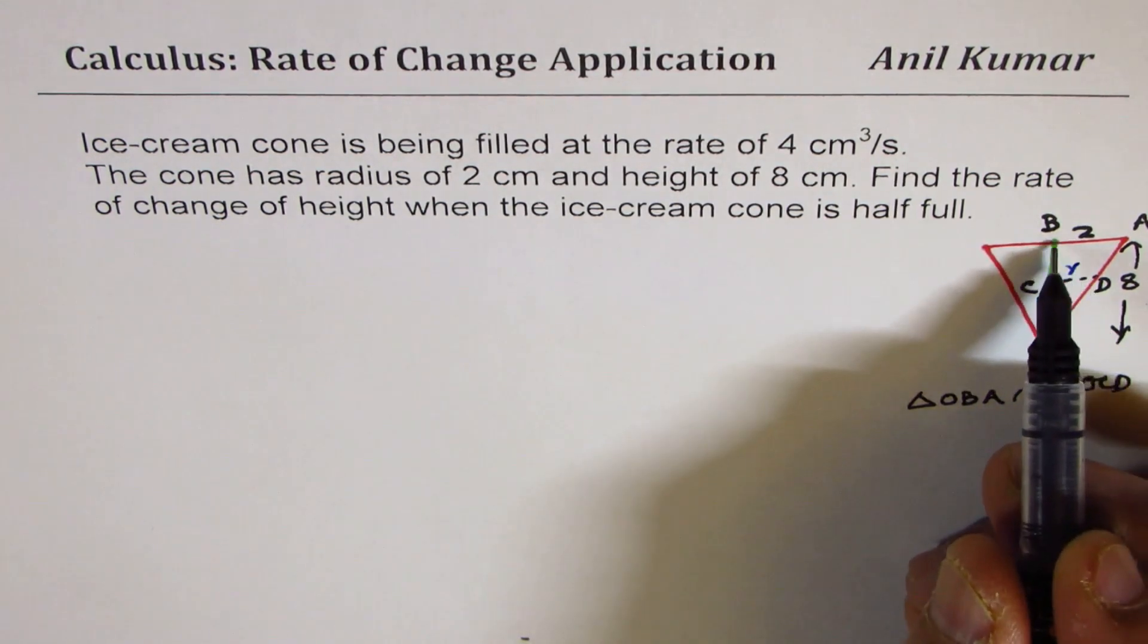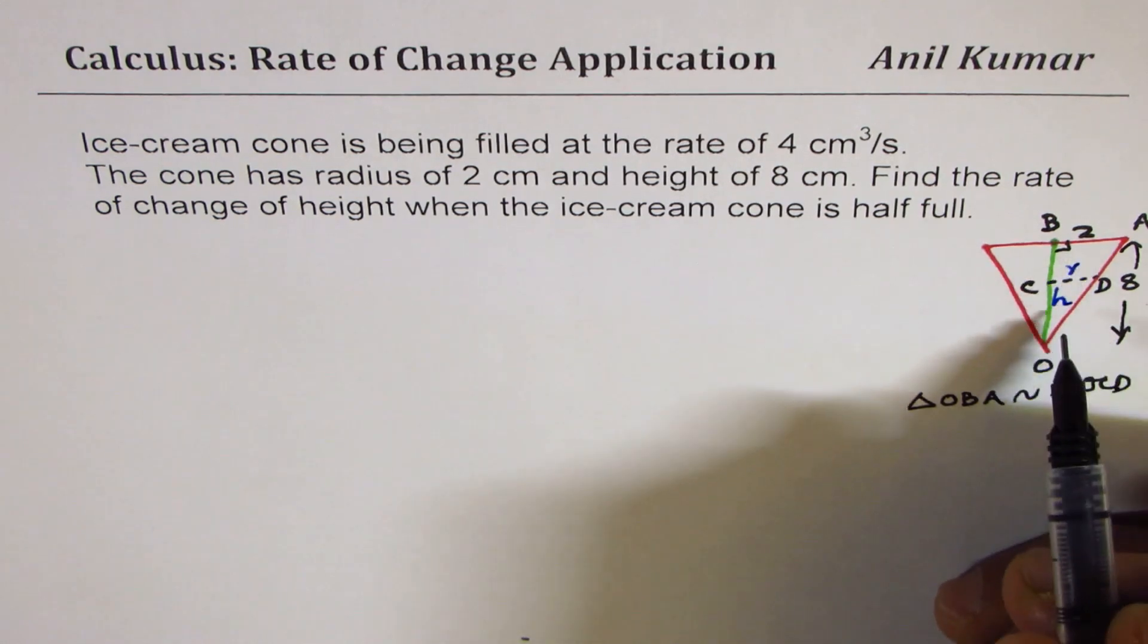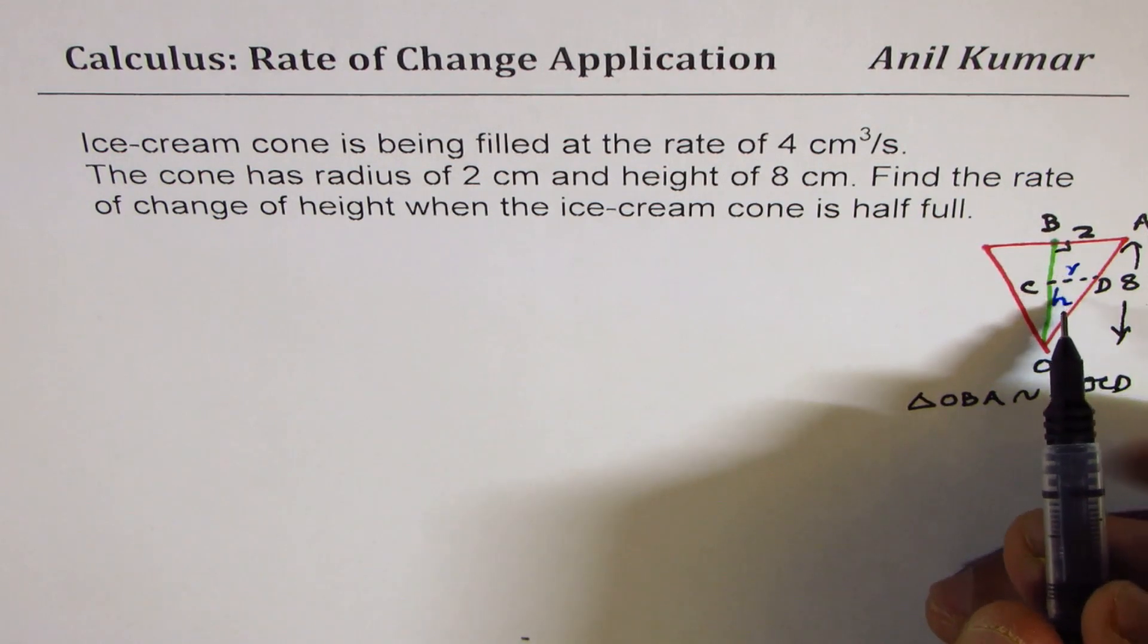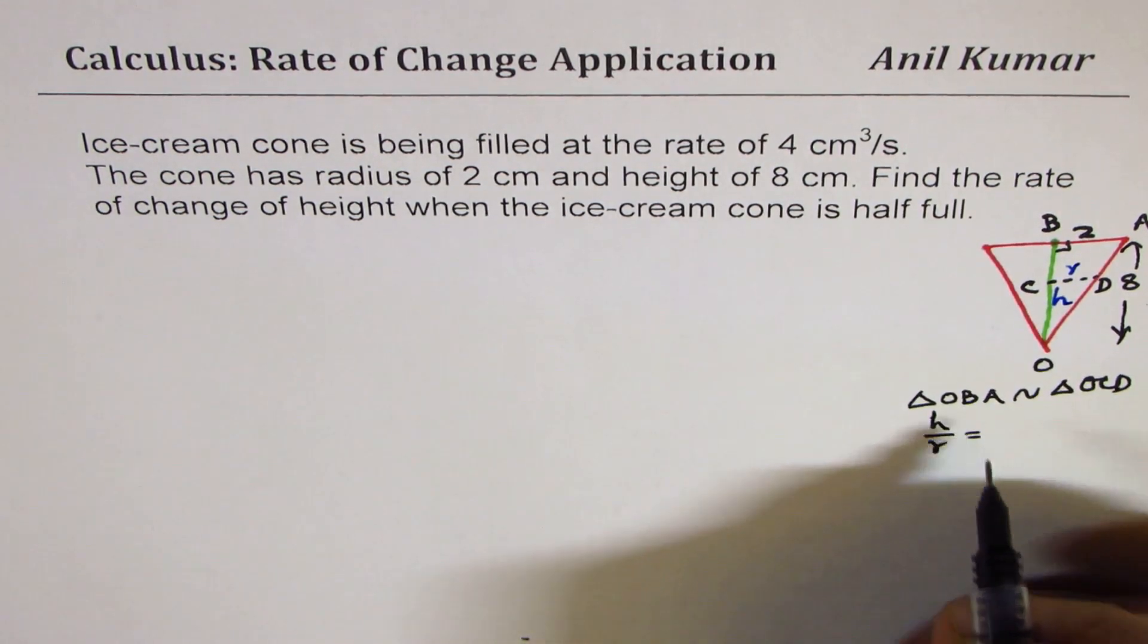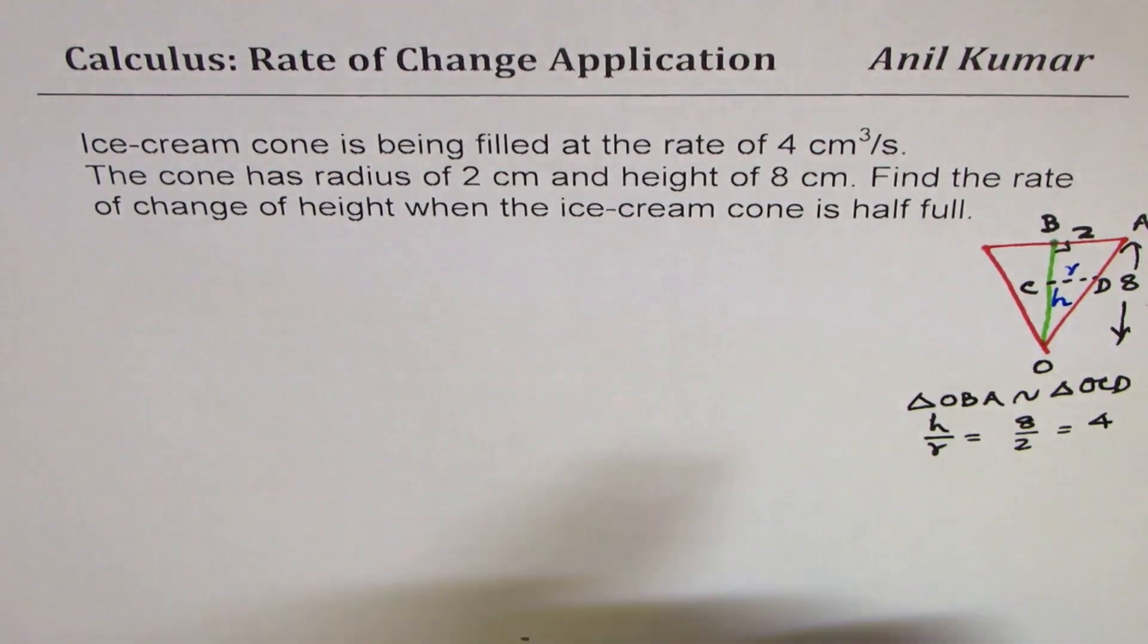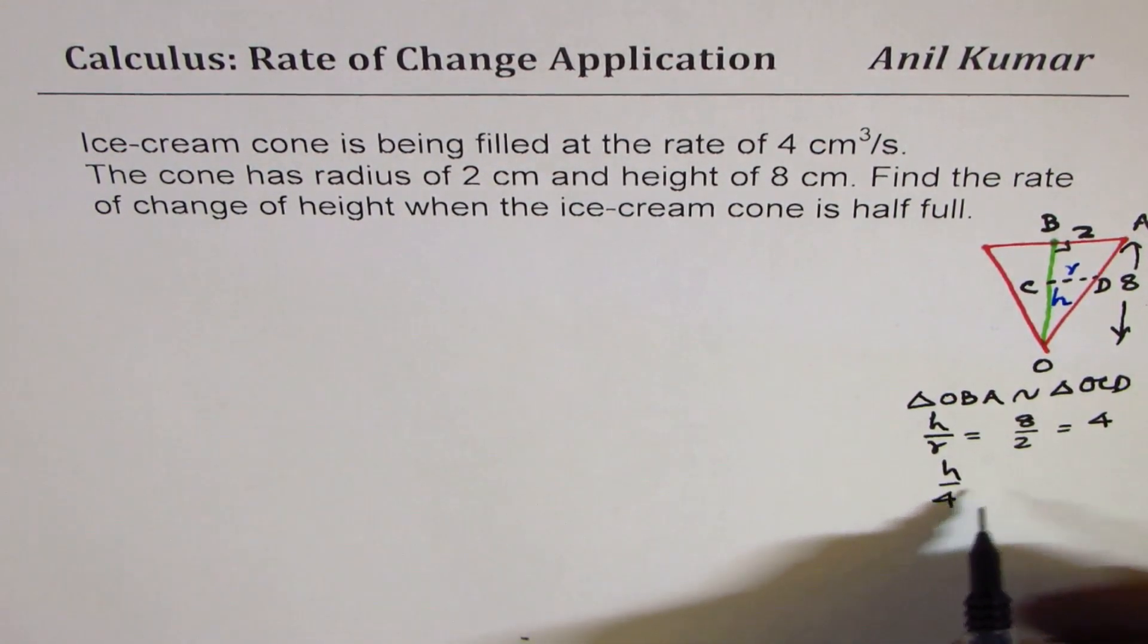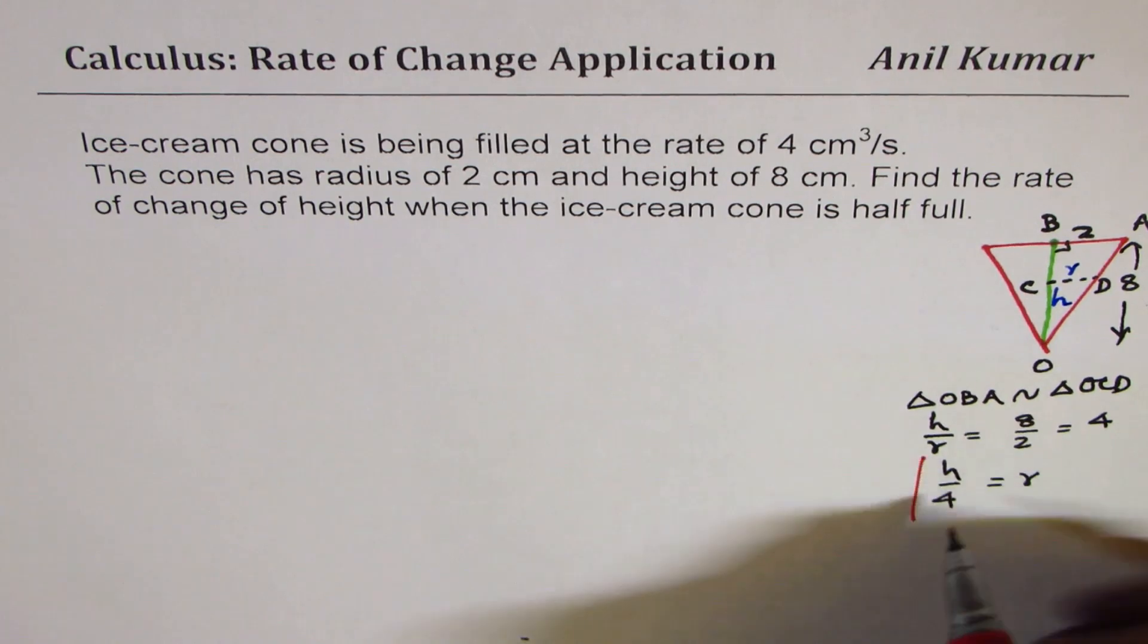Since they are similar, the sides are parallel, angles are 90 degrees. You can see that the ratio of sides is constant. So we can write height over radius for the smaller triangle is equal to 8 over 2, which is 4. So we can write radius in terms of height. So we get r = h/4. So that becomes a relation which we are going to use.